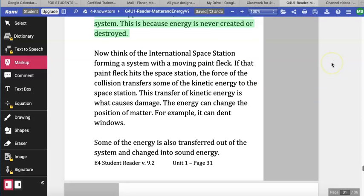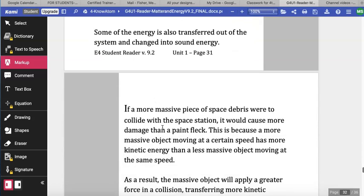Now think of the International Space Station forming a system with a moving paint fleck. If that paint fleck hits the space station, the force of the collision transfers some of the kinetic energy to the space station. The transfer of kinetic energy is what causes damage. The energy can change the position of matter. For example, it can dent windows. Some of the energy is also transferred out of the system and changed into sound energy.